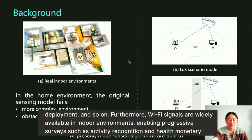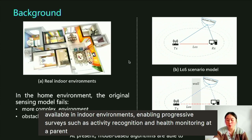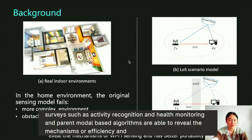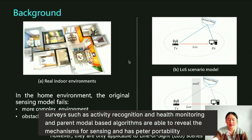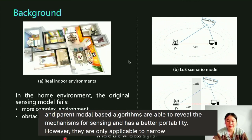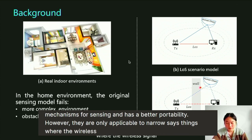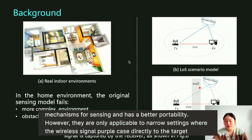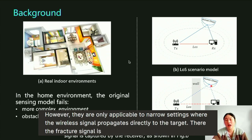At present, model-based algorithms are able to reveal the mechanisms of Wi-Fi sensing and have better portability. However, they are only applicable to line-of-sight scenes where the wireless signal propagates directly to the target and then the reflected signal is captured by the receiver, as shown in figure B.